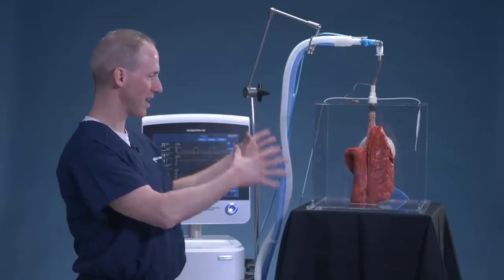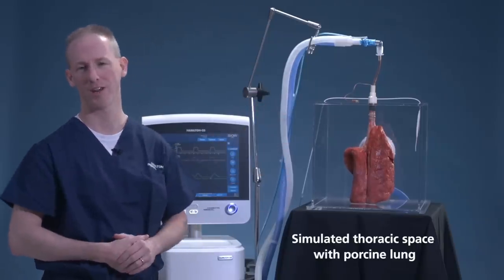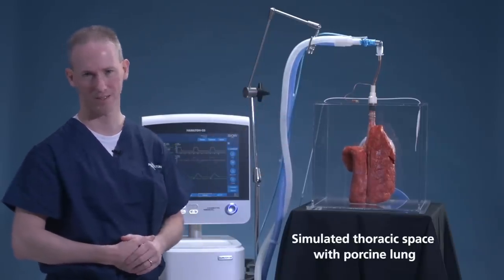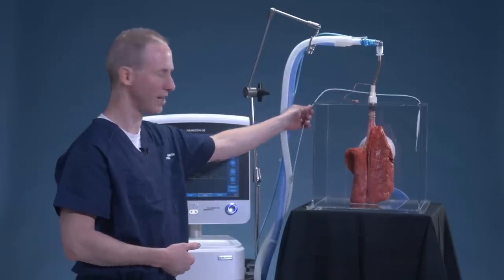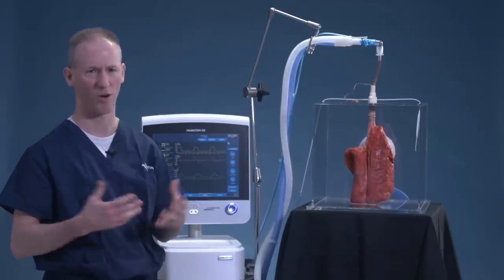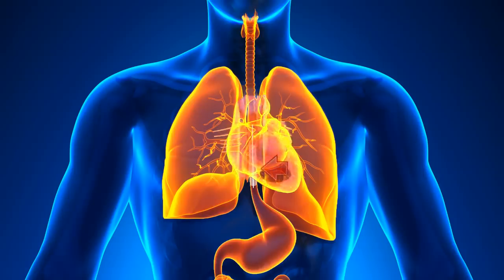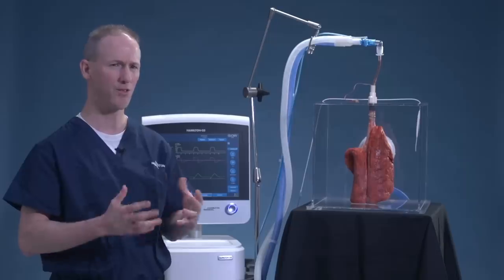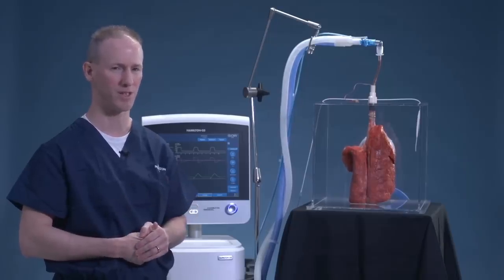Inside this box is essentially a simulated thoracic space. We have an esophageal catheter in there that would normally be placed in the esophageal space in the lower one-third of the esophagus, directly behind the heart, and just above the diaphragm. We use that pressure as a surrogate for pleural pressure.